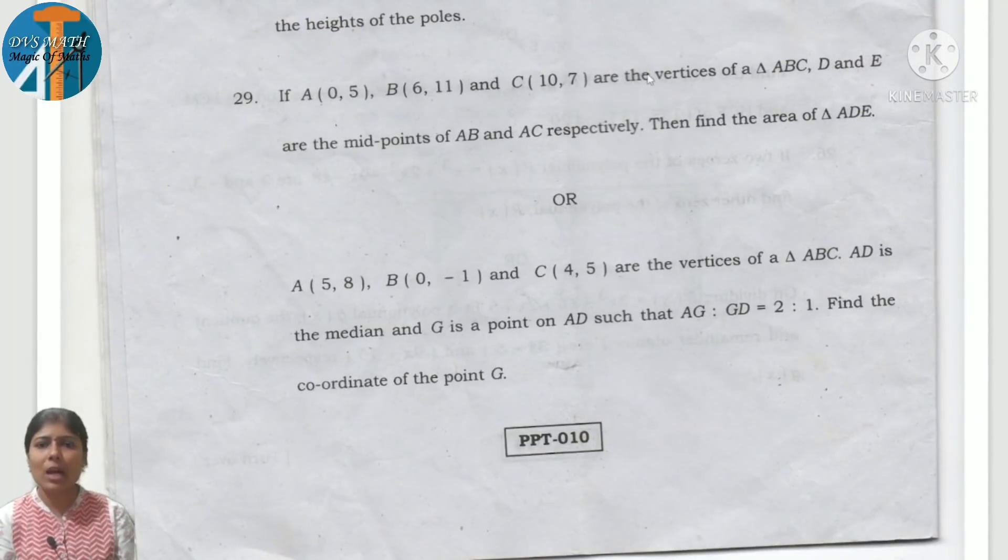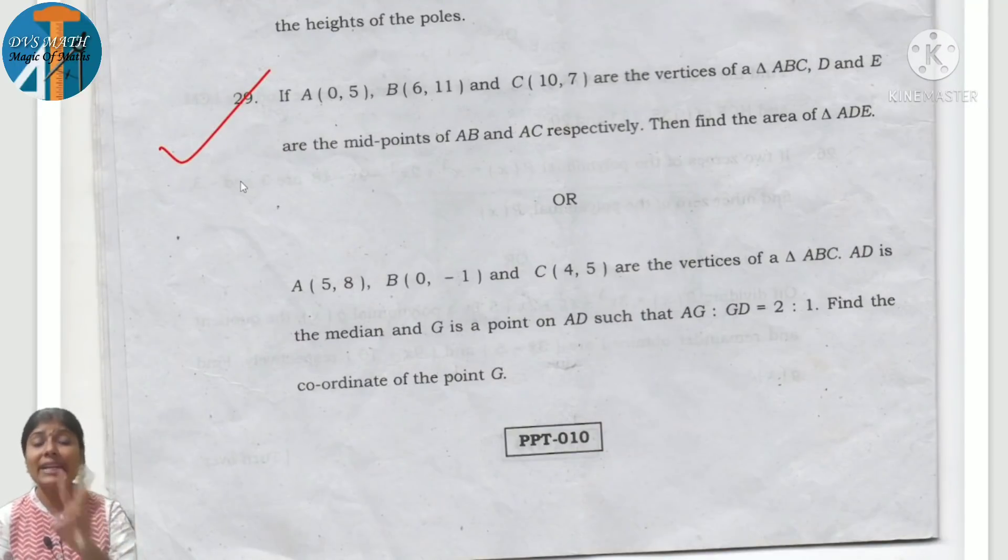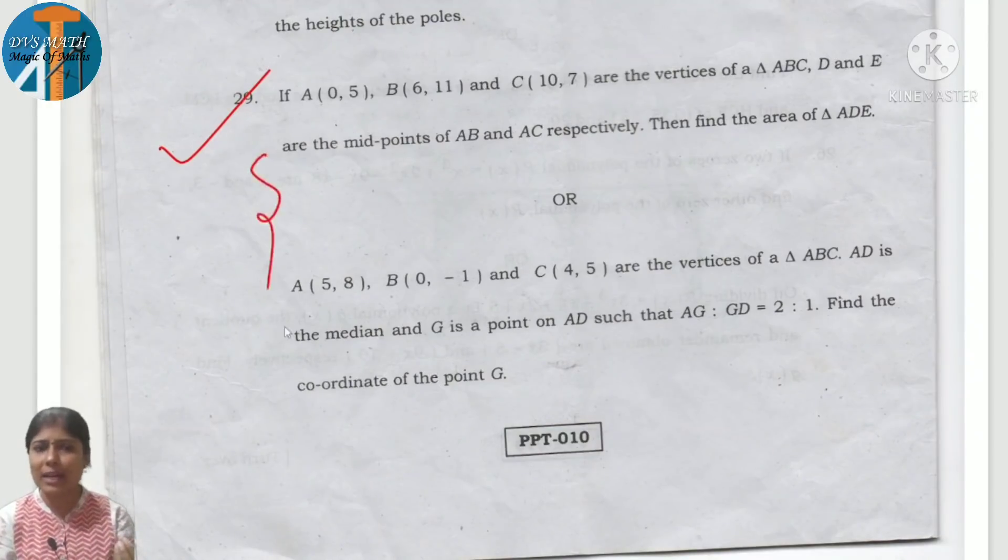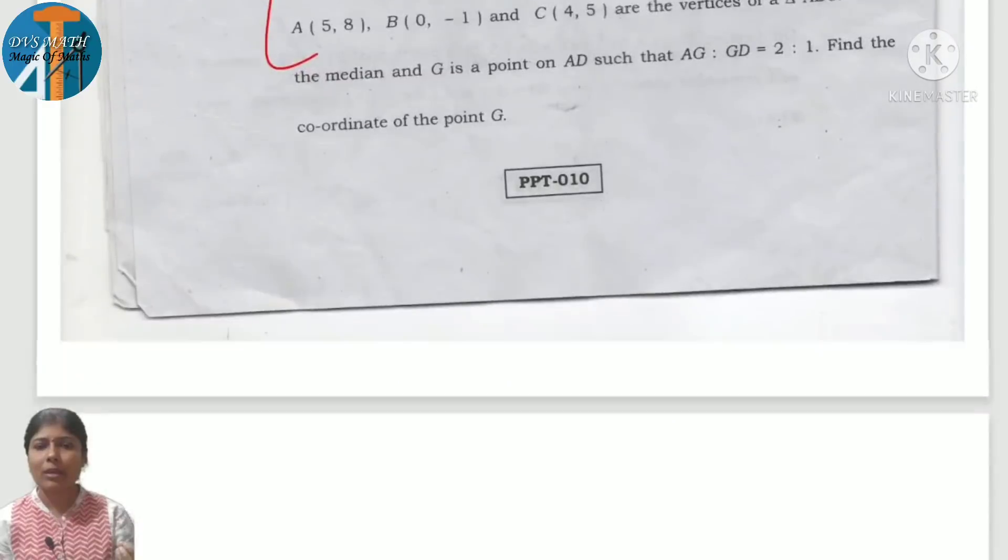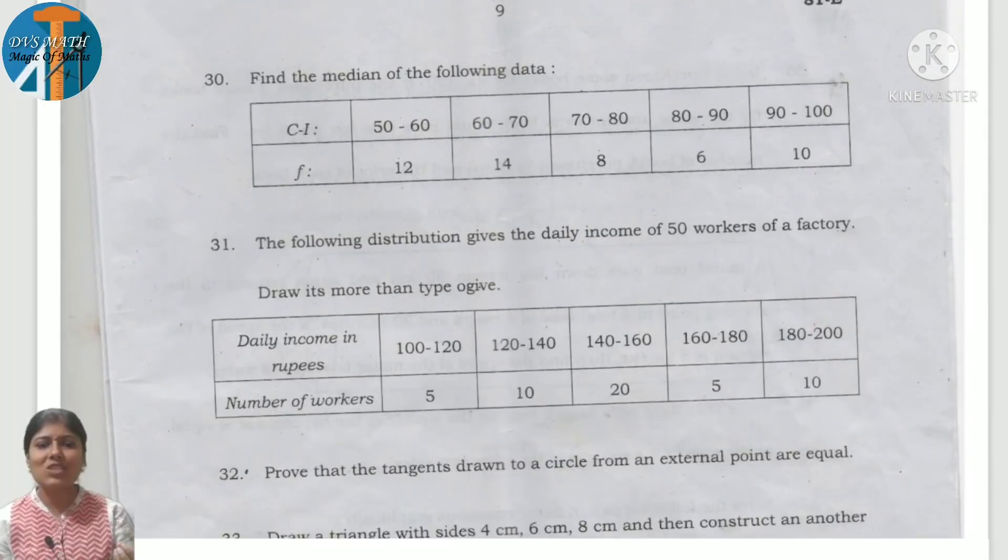If A, B, C are vertices of triangle ABC, D and E are midpoints. Same question I have done in area of triangle in the second session video. This is coordinate geometry application type. I have explained how to answer this.